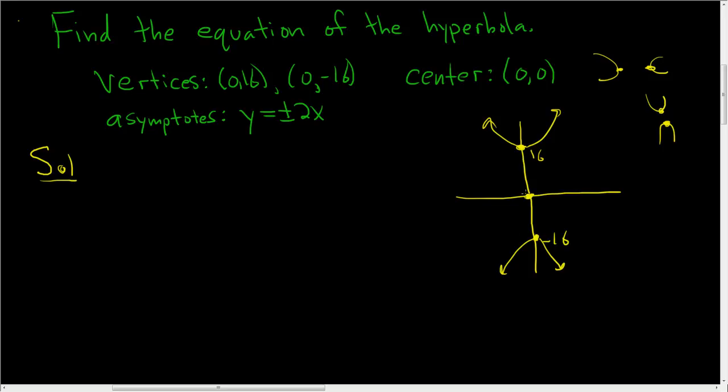Okay, so this is a. So a is 16. What about this? What about these asymptotes?